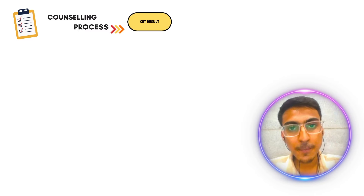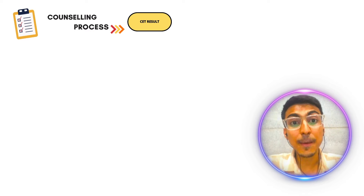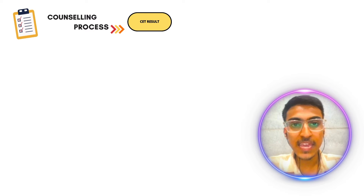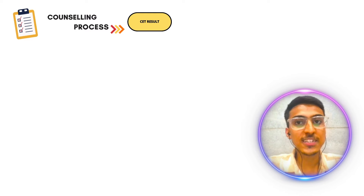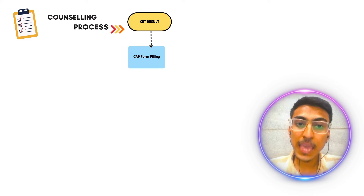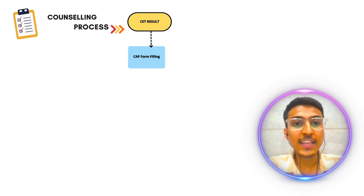The 3-month admission process starts with the results. When you see the results, the answer key is released first. Then the data comes — you have to look at it carefully. Results generally come in the first week of June, and you will get your MHCET result around that time.